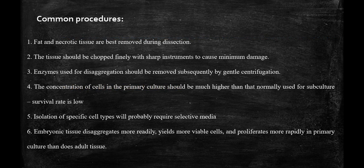Common procedures to follow: fat and necrotic tissues are best removed during disaggregation; the tissue should be finely chopped using sharp instruments to avoid cell damage; enzymes must be removed by centrifugation, as residual enzymes can kill the cells. Embryonic tissue disaggregates more readily and proliferates more rapidly than adult tissue, so it is always better to use embryonic tissue.